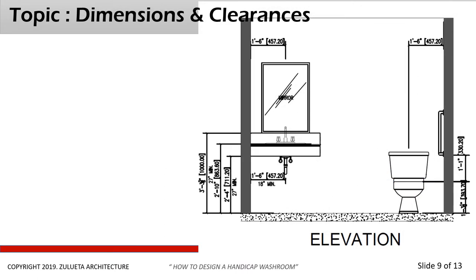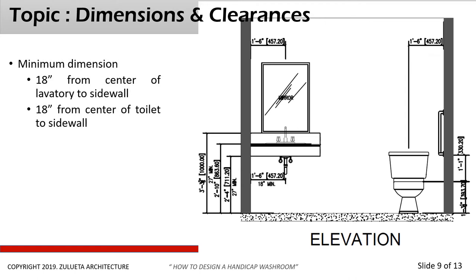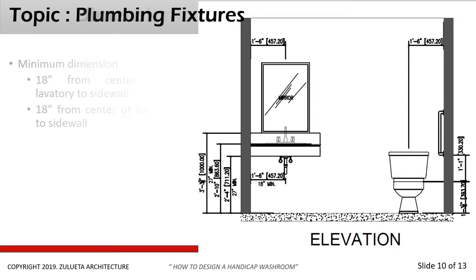What we have here is the elevation of a barrier-free washroom, with your toilet on the right side and your mirror and lavatory on the left side. The minimum dimension is 18 inches from the center of your lavatory to your sidewall, 18 inches from the center of your mirror to your sidewall, and 18 inches from your toilet to the sidewall.